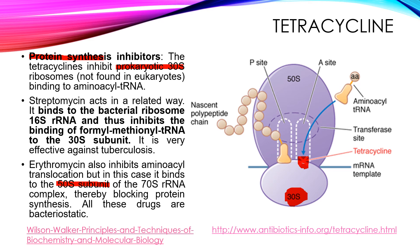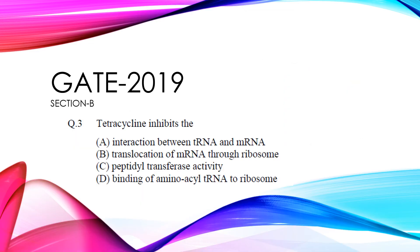Now, as we have understood the function of tetracycline, let's go back to our question. Our options are: a) interaction between tRNA and mRNA, b) translocation of mRNA through the ribosome, c) peptidyl transferase activity, and d) binding of aminoacyl tRNA to a ribosome.